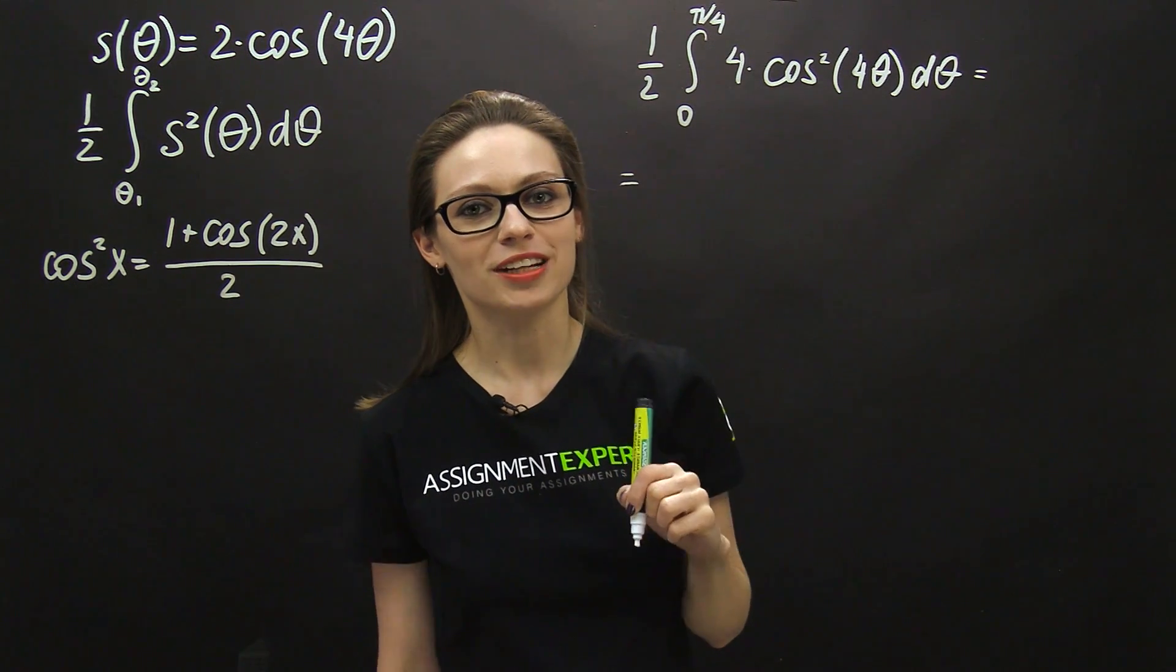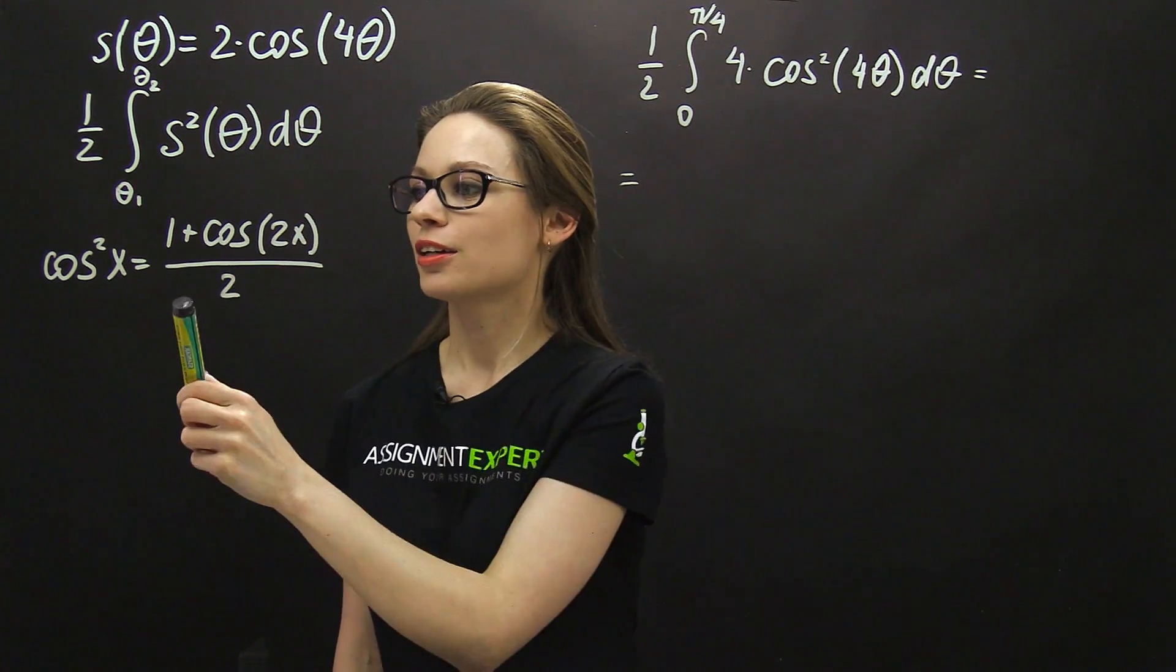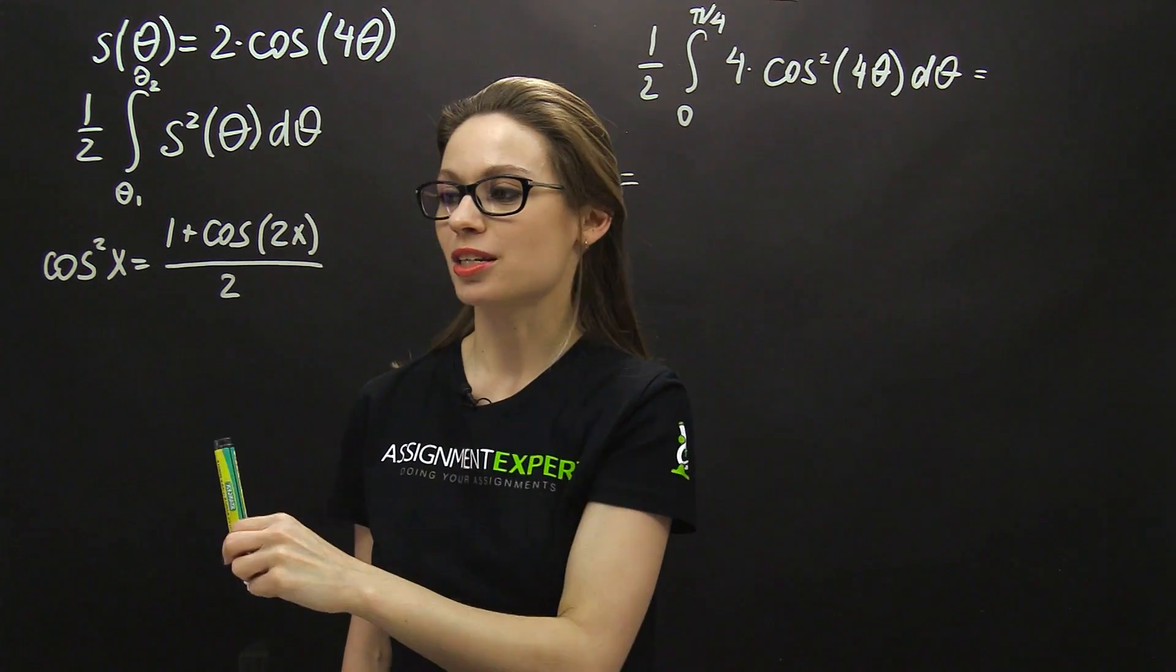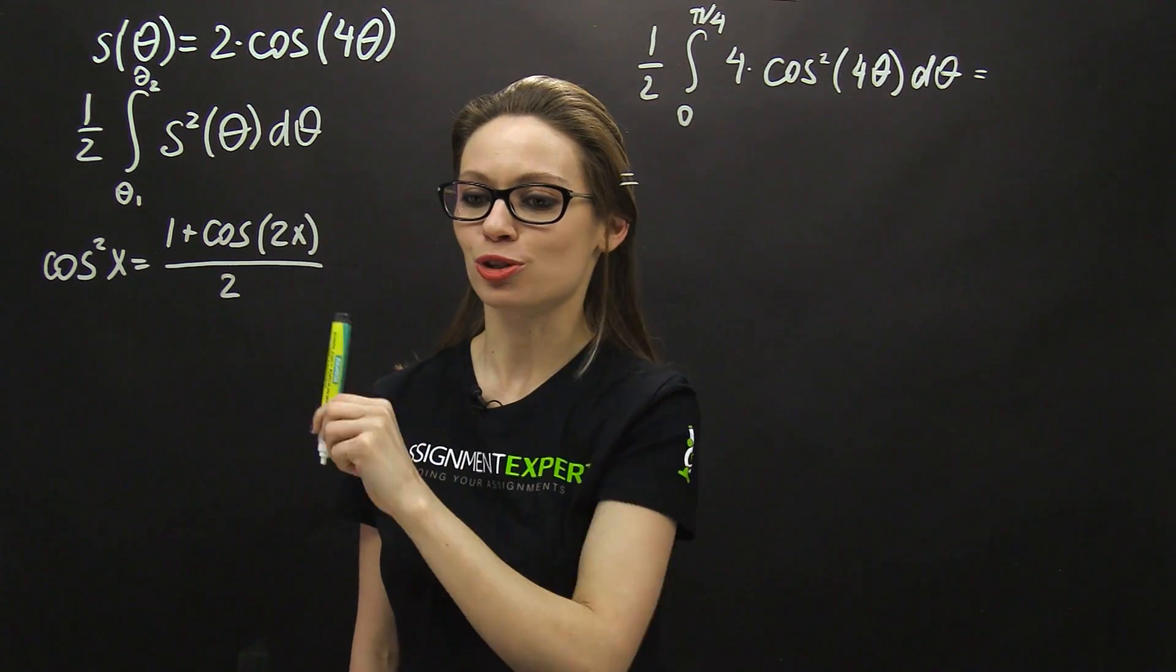Also, let's recall the trigonometric identity stating that cosine squared of the argument is equal to 1 plus cosine of double argument over 2.